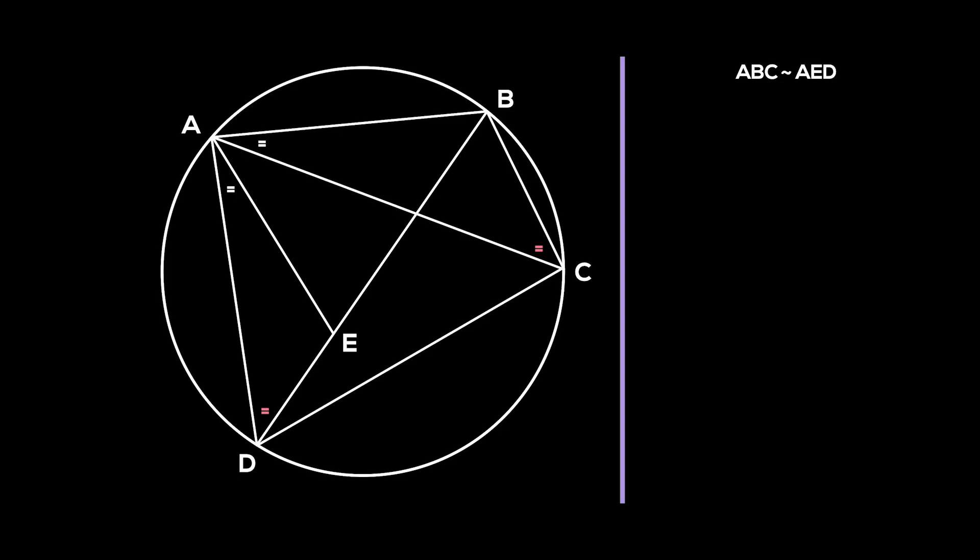As they are similar triangles, we can equate the ratio of their corresponding side lengths. AC over AD is equal to BC over DE. Cross-multiplying, we get AC times DE is equal to AD times BC.